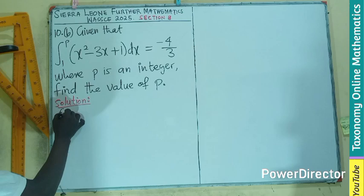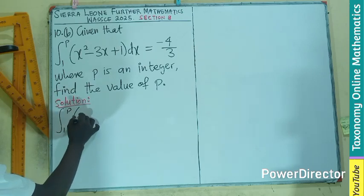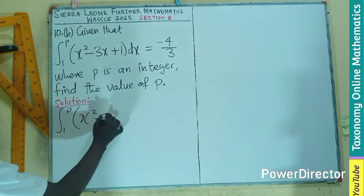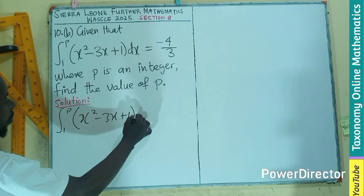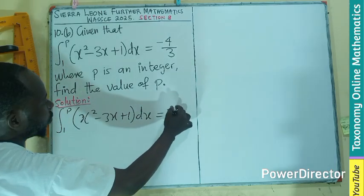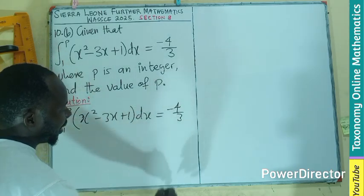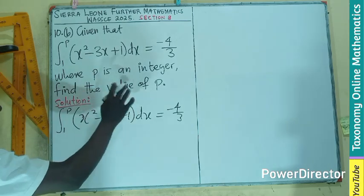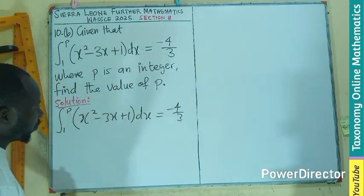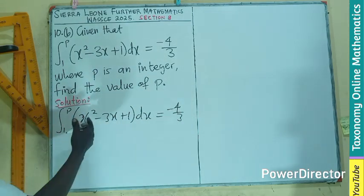Let's apply the concept we know. Integral from 1 to p of (x squared minus 3x plus 1)dx equals minus 4 on 3. This means that when we find the integral of this, the answer we are looking for should be minus 4 on 3.